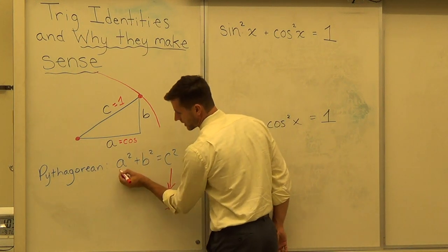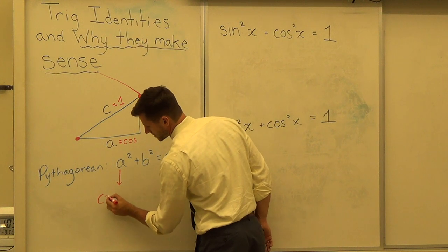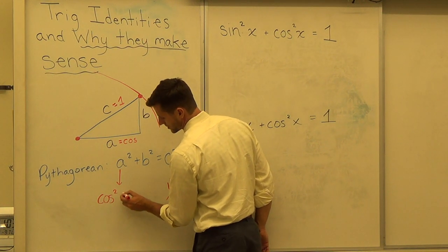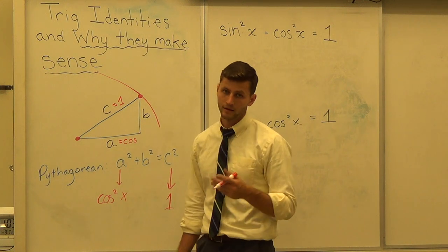Underneath A squared I'm going to write, instead of A, cosine squared. And I'll put X or you could put theta for the angle.